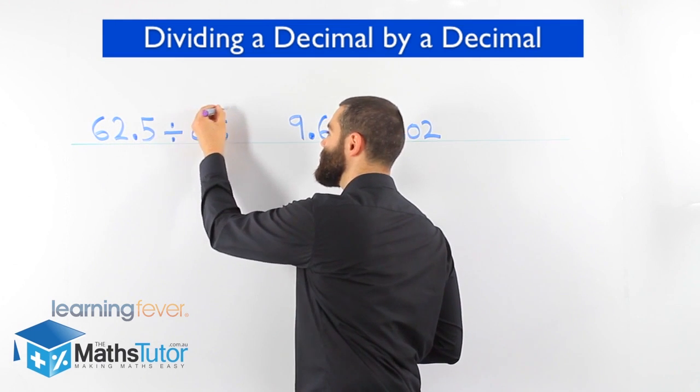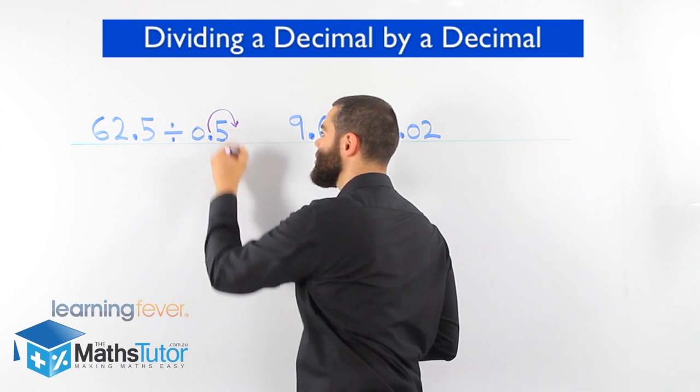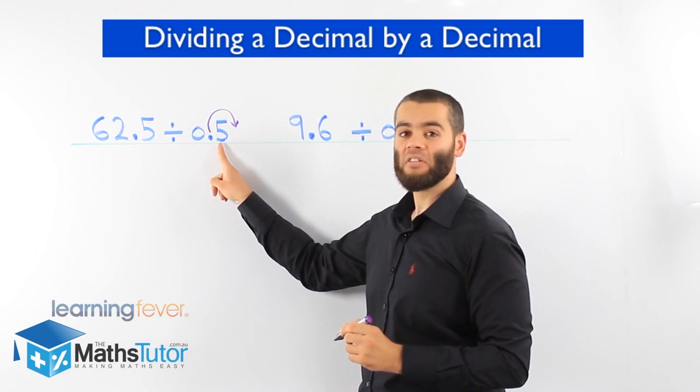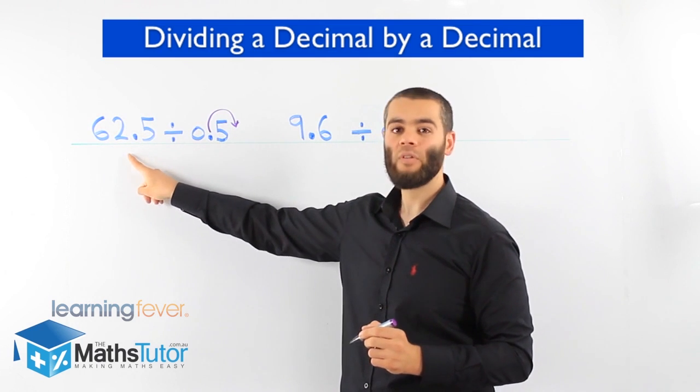To make this a whole number, we move the point to the right once. What we do to this side, we've got to do to that side.